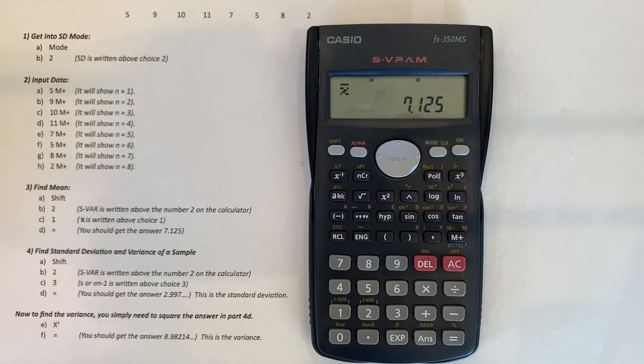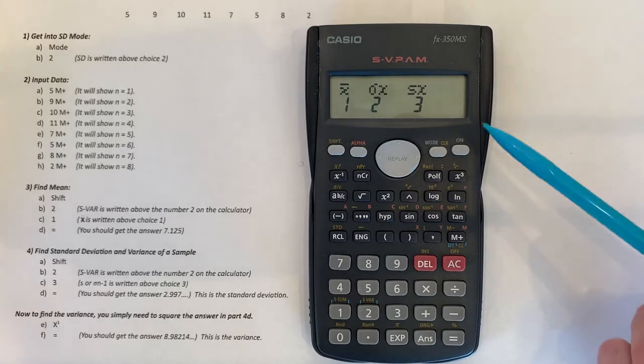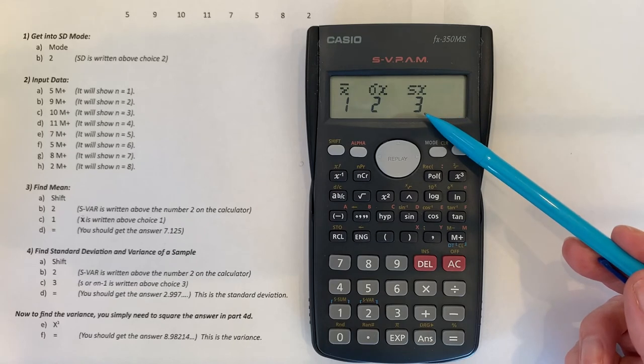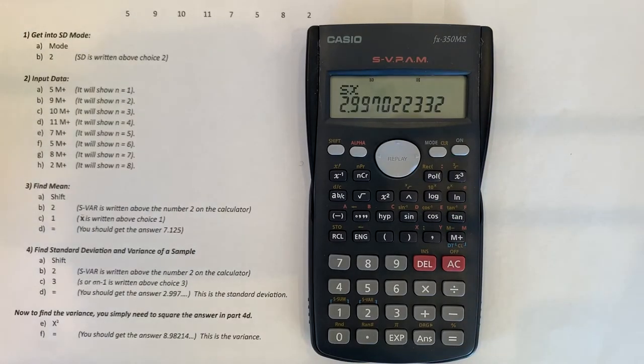Next I want to find the standard deviation. I go back to that menu shift 2, but then I'm going to choose choice 3 and then hit equals. Going back to shift 2 brings me to the menu. The choice I want is the sample standard deviation S, which is number 3. So I hit 3, and because the cursor is blinking, I hit equals. My answer is 2.997 and so on.